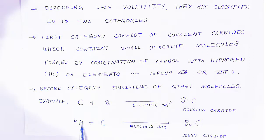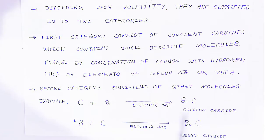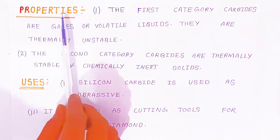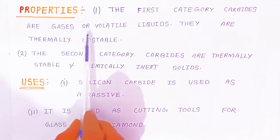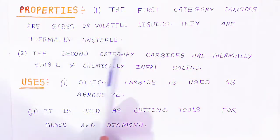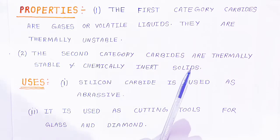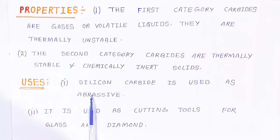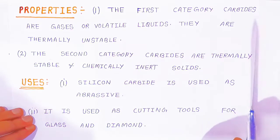Boron also has similar electropositive properties to carbon. In the presence of an electric arc, boron reacts with carbon to form boron carbide (B₄C). Silicon carbide and boron carbide are giant molecules. The first category compounds are gases or volatile liquids and are thermally unstable. The second category carbides are thermally stable and chemically inert solids. Silicon carbide is used as an abrasive and as a cutting tool for glass and diamond, because it is very hard and very stable.